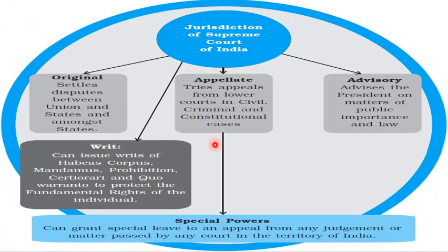Here is the flowchart representation of the jurisdiction of the Supreme Court — the area of authority of the Supreme Court. The jurisdictions are as follows. First, Original Jurisdiction: the Supreme Court settles disputes between the Union and the states, and among the states. Second, Appellate Jurisdiction: the Supreme Court tries appeals from lower courts in civil, criminal, and constitutional cases. It also functions as an advisory court and advises the President on matters of public importance and law.